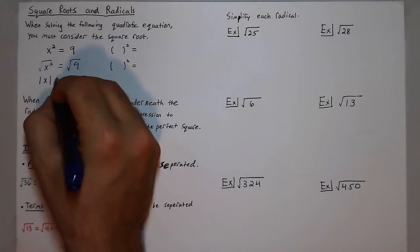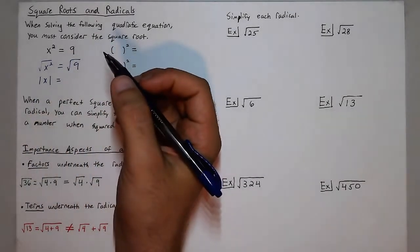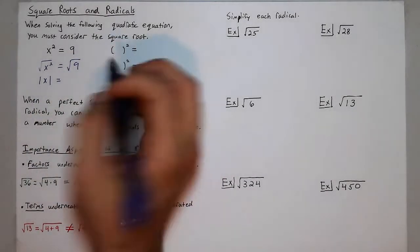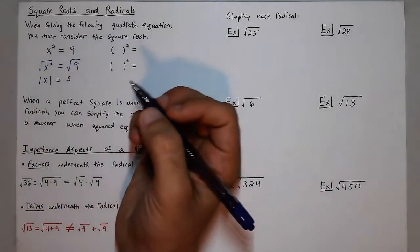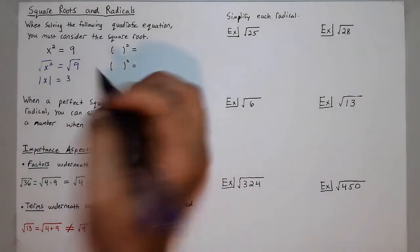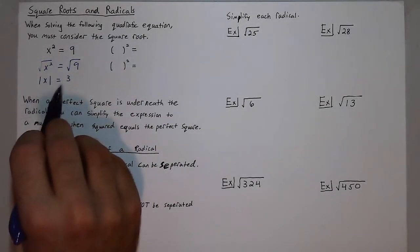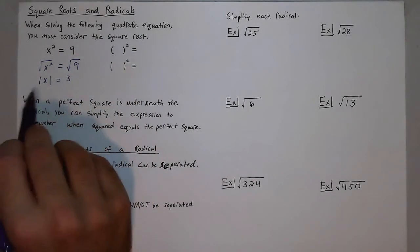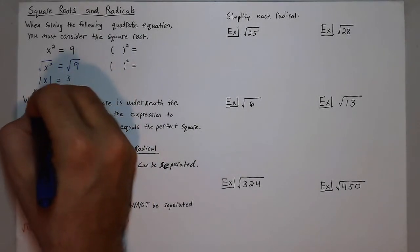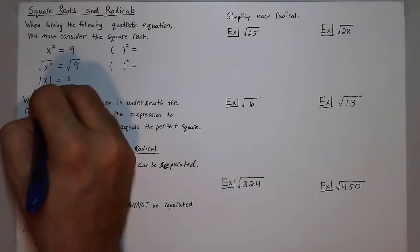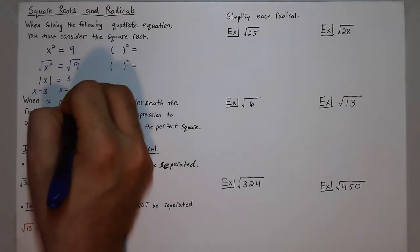The square root of 9 — we're trying to think of what number squared would give me 9. Well, that would be 3. So I have two possible numbers for this equation: x is equal to 3 as well as x is equal to negative 3.